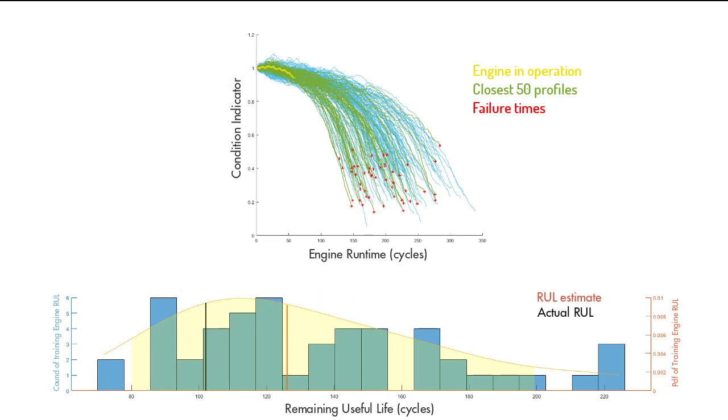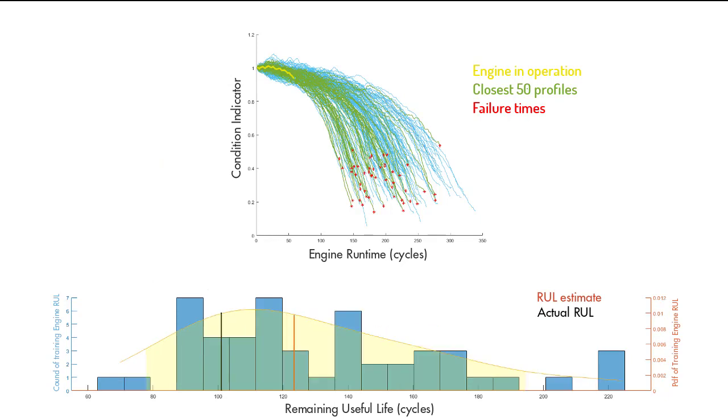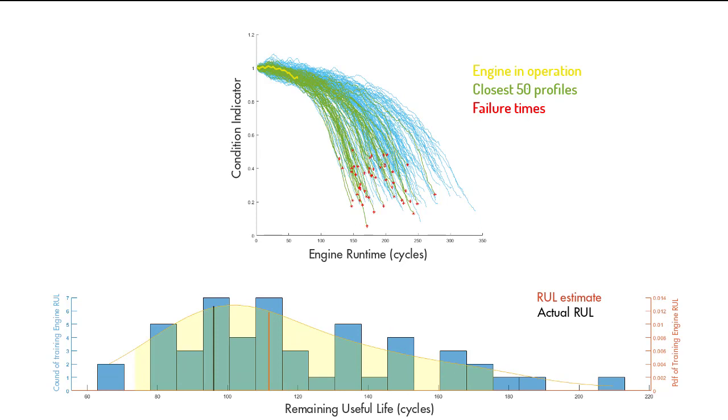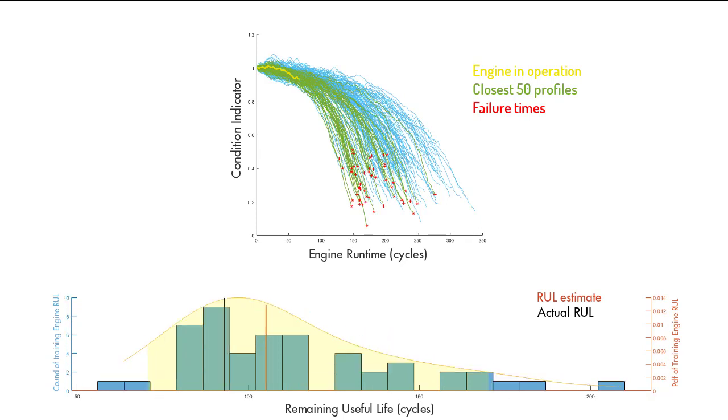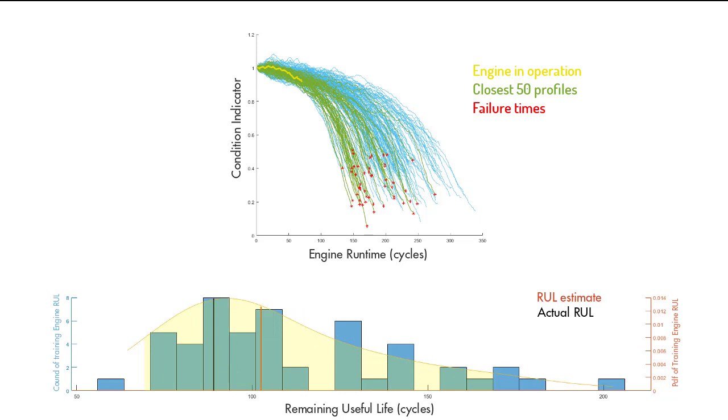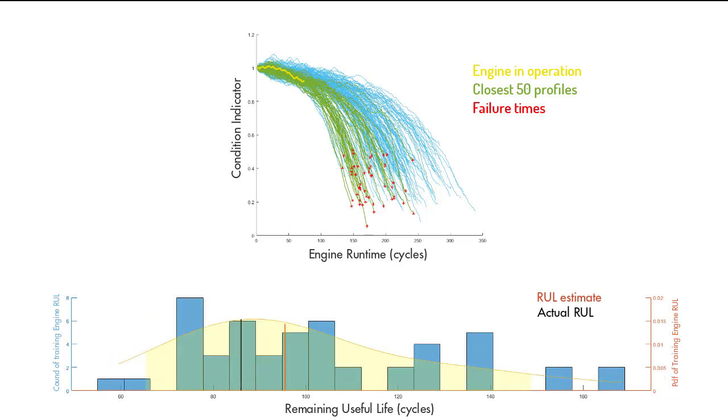Let's play the rest of the animation. As we just discussed, at each iteration, the similarity model finds the closest paths that are shown in green and computes the RUL using a probability distribution plot.